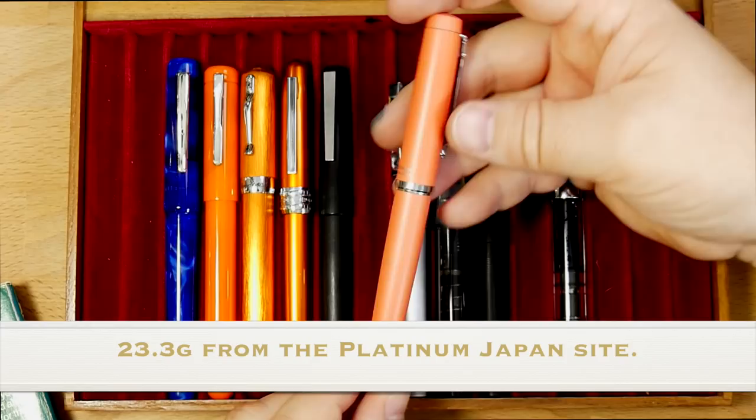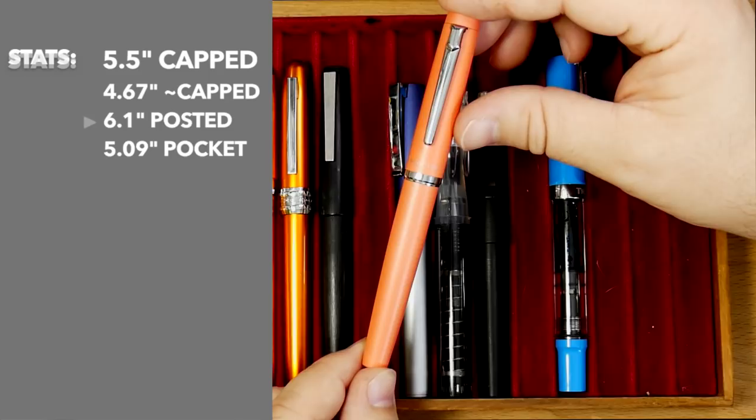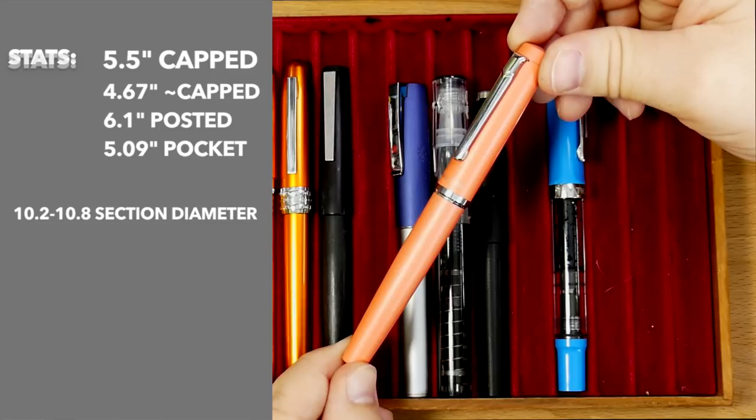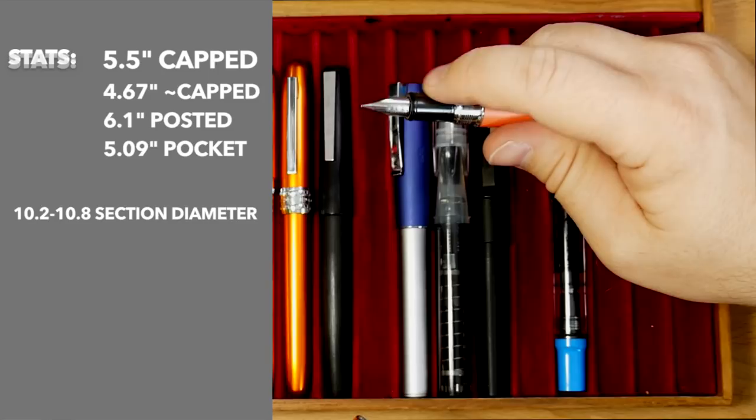The length is 5.5 inches capped, 4.7 uncapped, 6.1 inches posted. And the pocket depth, the all-important pocket depth, is 5.09 inches, so right about 5 inches. And this section is right in my perfect comfort zone of 10.2 to 10.8. It has a slight taper. So there you go.